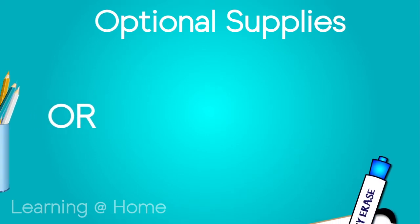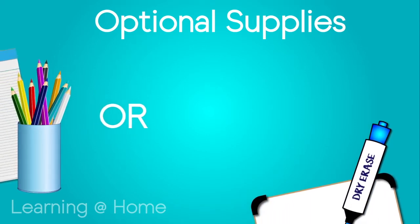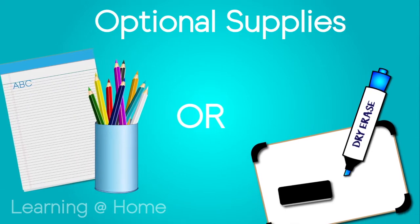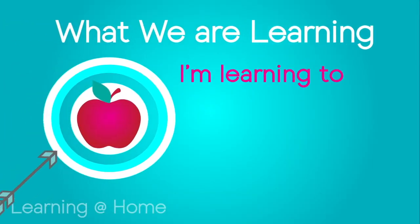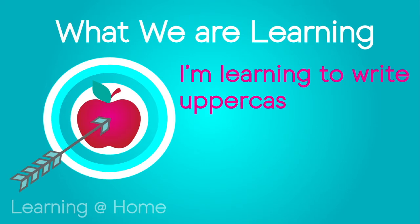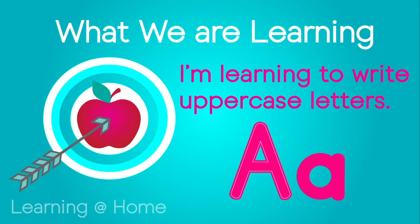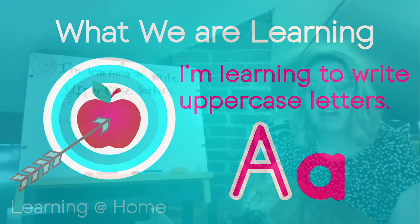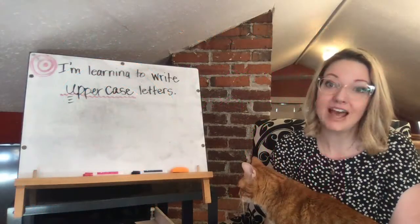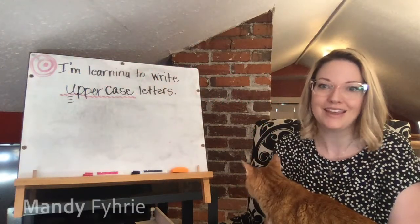Before we get started, let's get some optional supplies. You can use pen and paper, pencil and paper, or a dry erase marker and a whiteboard — don't forget the eraser. Our learning target for today is: I'm learning to write uppercase letters. Another word for uppercase letters is capital, and that tends to be the word I use, but just know that uppercase letters and capital letters mean the exact same thing.